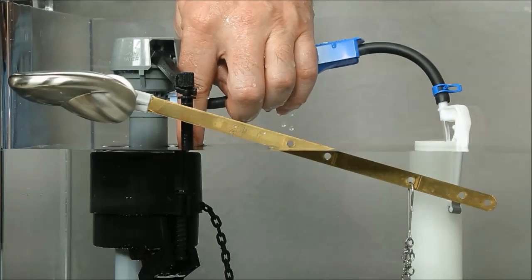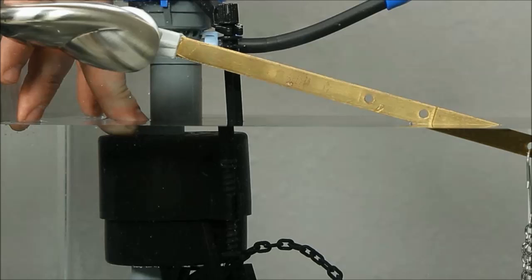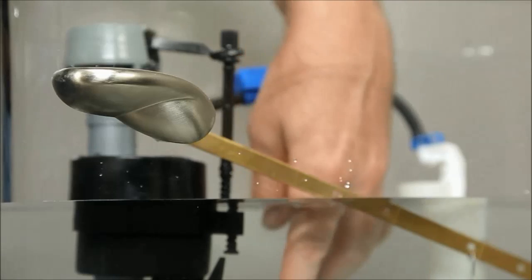Push the float cup down and submerge it under water for 30 seconds. This will ensure enough water enters the float in order to stabilize its buoyancy.